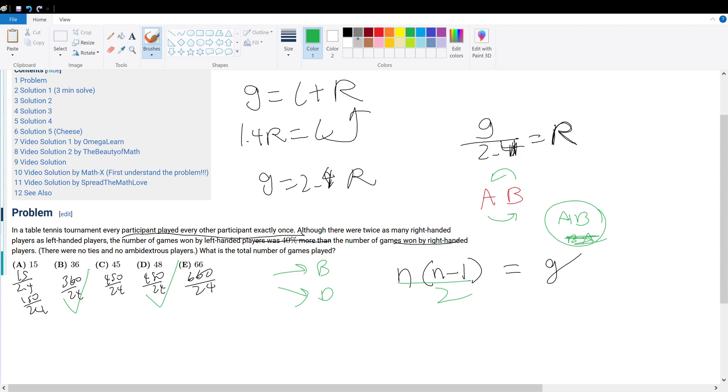This is the total number of games played in this tournament. So let's set 36 to be our answer, for example. So n times n minus 1 divided by 2 equals 36.